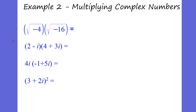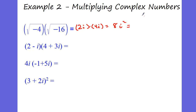Let's take a look at multiplying complex numbers. This is a little bit more difficult, but it's something that you want to be really good at. Here we have the square root of negative 4, that's called 2i, and we're multiplied by the square root of negative 16, that's 4i. So I'm taking 2i times 4i: 2 times 4 is 8, i times i is i squared. And remember, i squared is equal to negative 1, so that ends up giving me negative 8 overall.